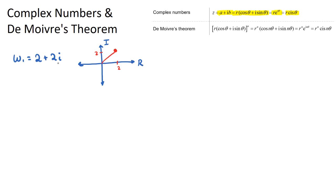This is currently in Cartesian form. If we wanted to write it in modulus-argument form: the modulus means the size or length — so if we picture this complex number as a line, the modulus is the length of that line, which we find using Pythagoras with the real and imaginary components. The argument is the angle that our complex number makes to the positive x-axis.